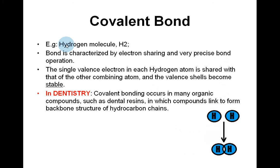Covalent bonds — for example, the hydrogen molecule — are characterized by electron sharing and very precise bond orientation. The single valence electron in each hydrogen atom is shared with that of the other combining atom, and the valence shell becomes stable. In dentistry, covalent bonding occurs in many organic compounds such as dental resins, in which compounds are linked to form backbone structures of hydrocarbon chains.